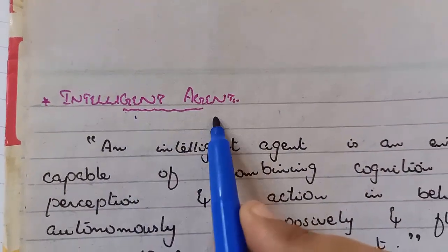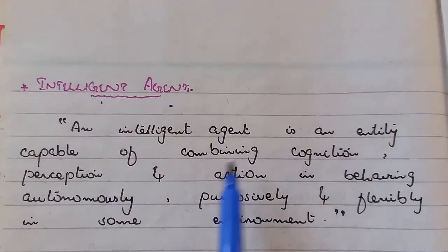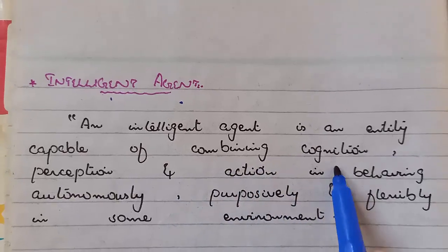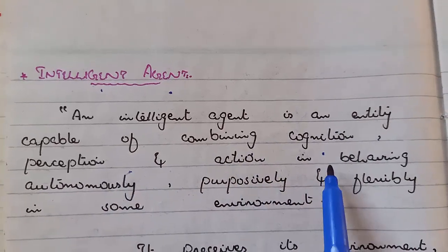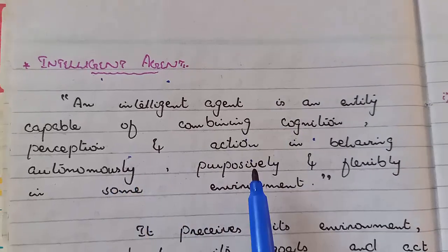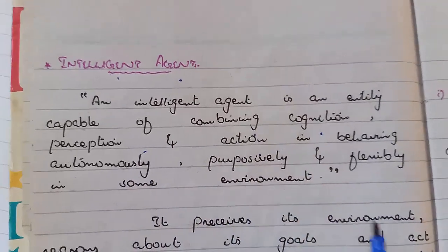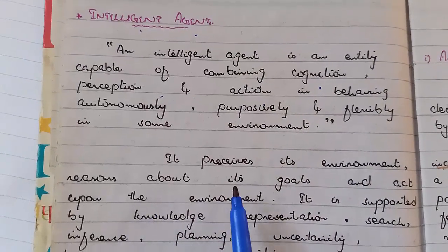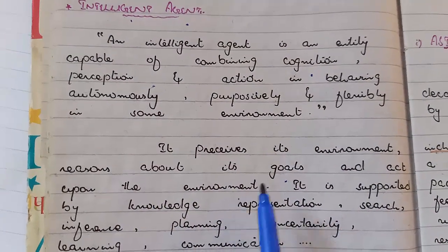An intelligent agent is an entity capable of combining cognition, perception and action in behaving autonomously, purposively and flexibly in some environment. It perceives its environment, reasons about its goals, and acts upon the environment.